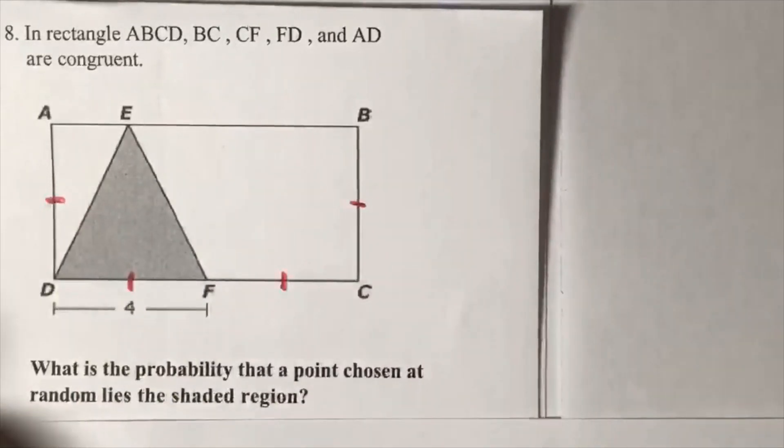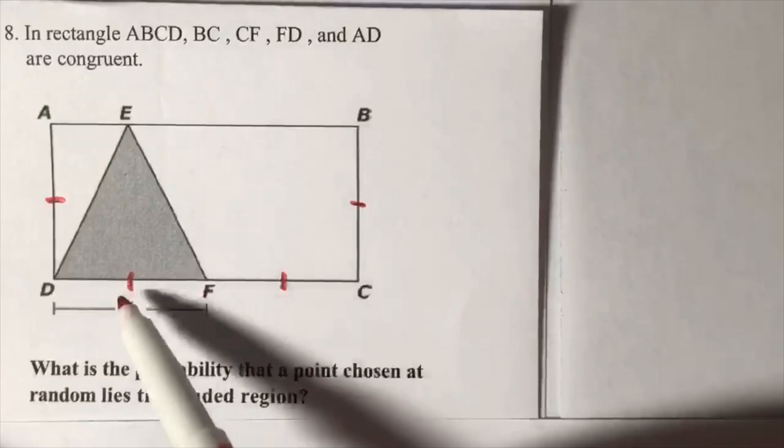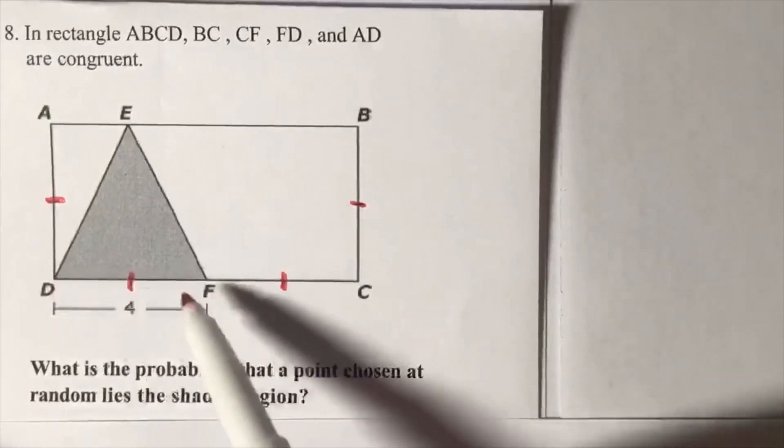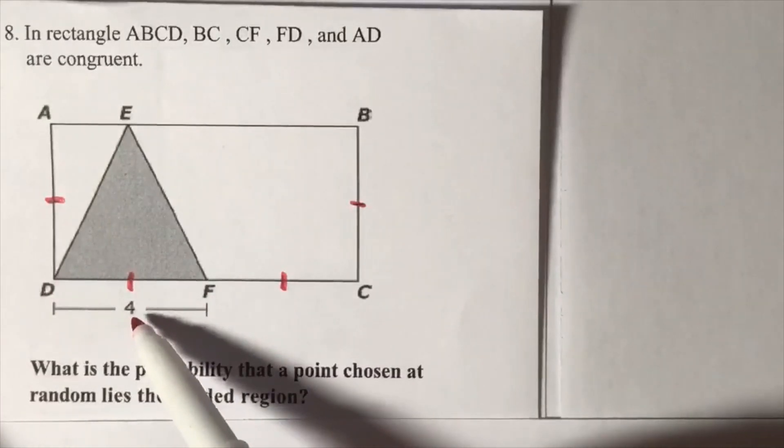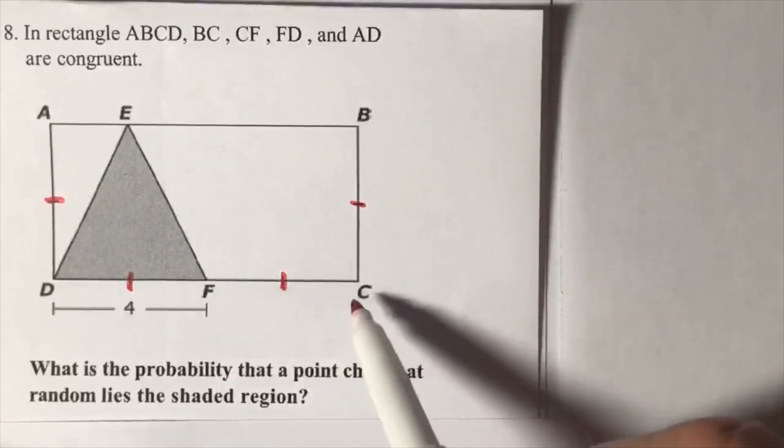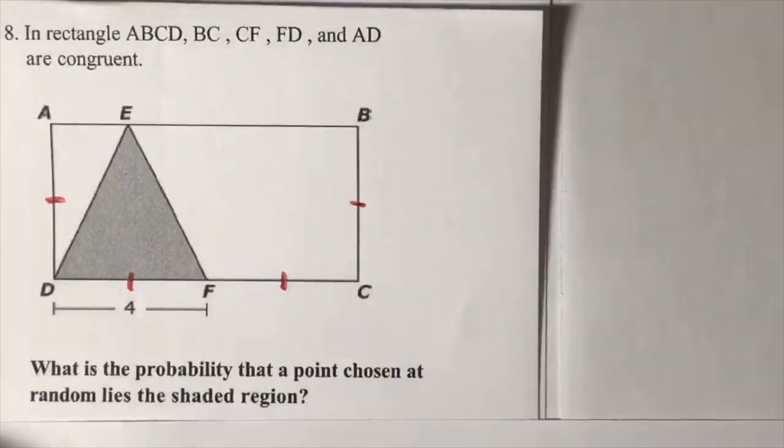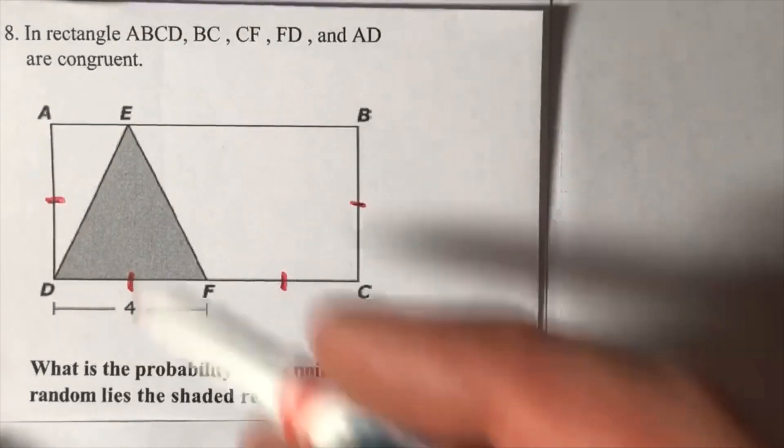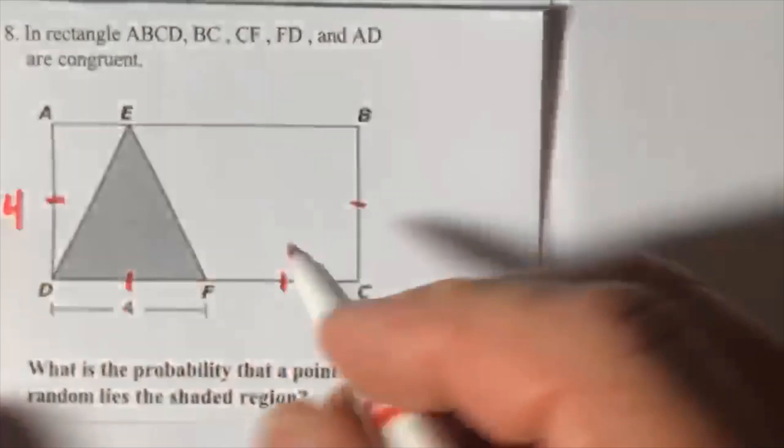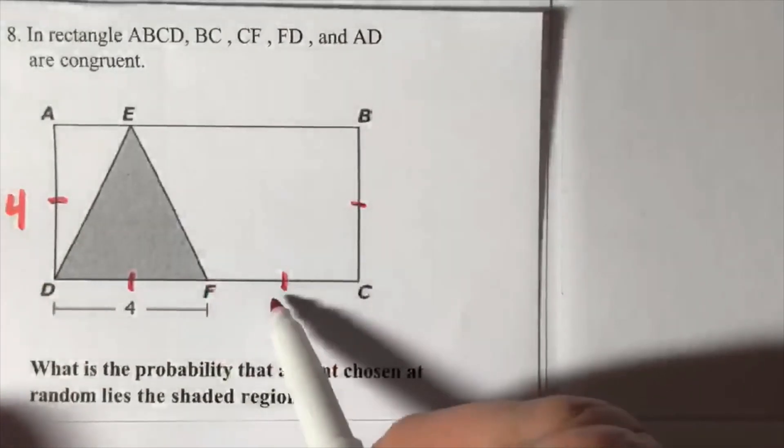It's also given us some information here about the length of FC, BC, and AD. What would be the lengths there? Go ahead and write that in, so from F to C and from B to C is four.